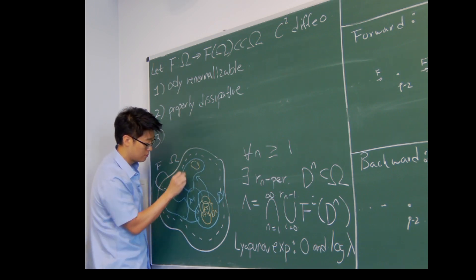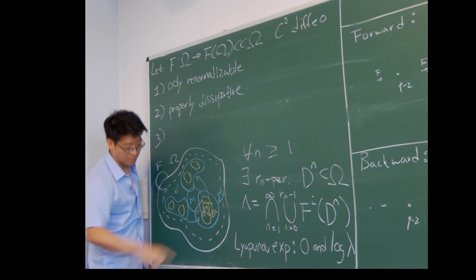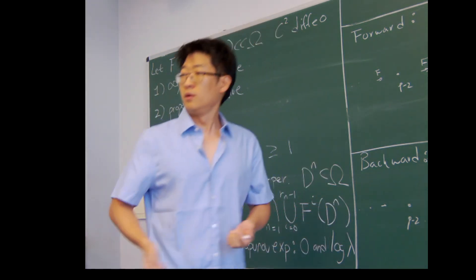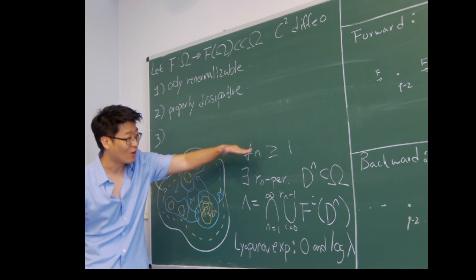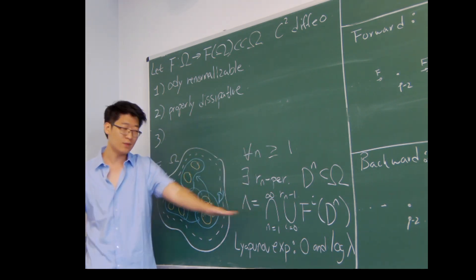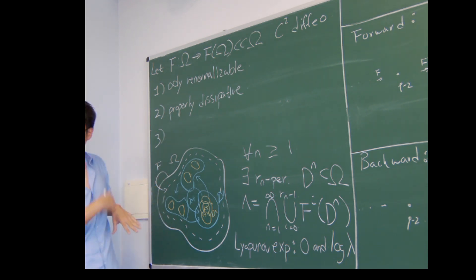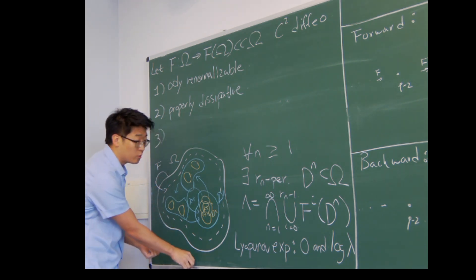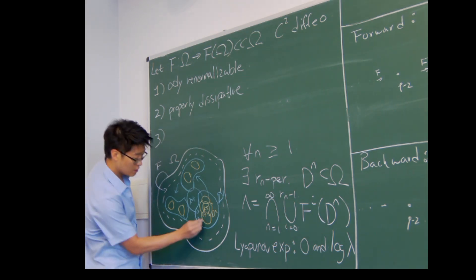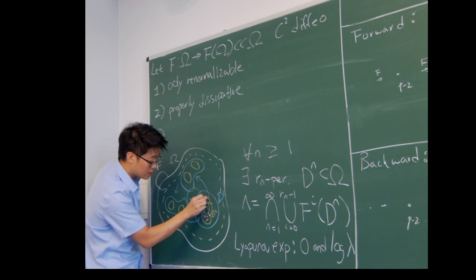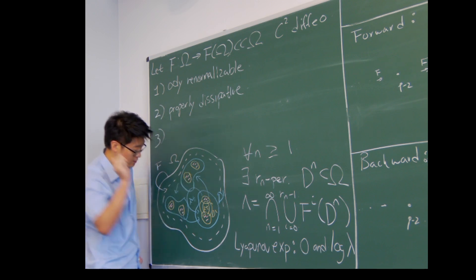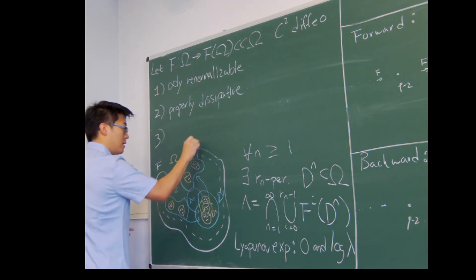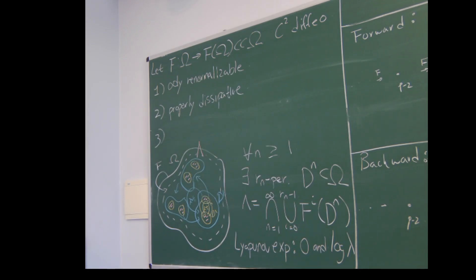If you apply F once, it will go here, one more time, and then come back into itself. So for all n, we have this periodic domain D_n, and we can form the nested intersection of all these cycles of periodic disks. This gives us the renormalization limit set, lambda — or what we also called the odometer. It's some totally invariant, compact, very disconnected set that lies inside all of these periodic cycles. This is the set we're most interested in.